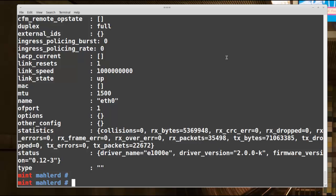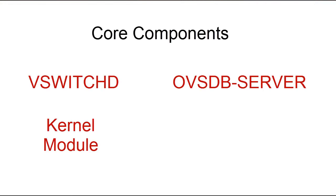That's from the OVSDB server. OVS also has a kernel module. When a packet arrives at a virtual switch, if there is a cached match in the kernel module, the cached actions are taken. If there's not a match in the kernel module, the packet is punted into vSwitchD in user space. Future matching packets will then typically have a fast path through the cached entries in the OVS kernel module.